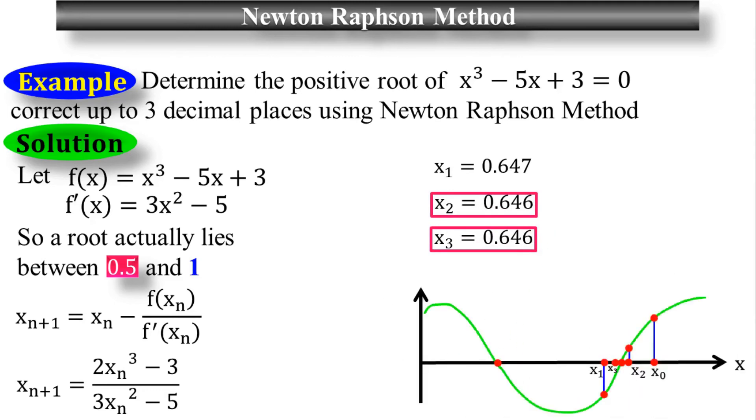Look at the diagram here. This is my x sub 2 and this is my x sub 3, which is the positive root. If the values of x sub 2 and x sub 3 are below the x-axis, then the root is negative. But here the root is positive.